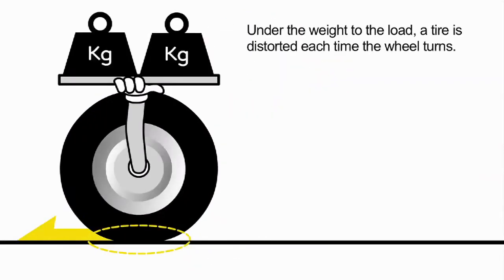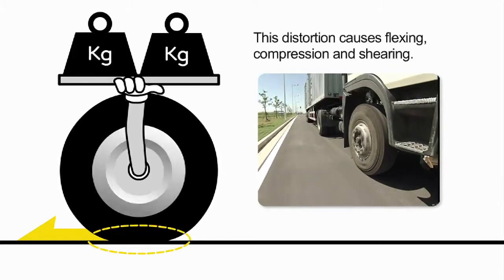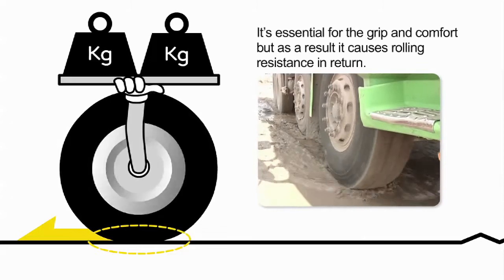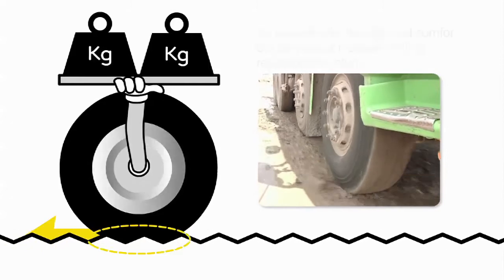Under the weight of the load, a tire is distorted each time the wheel turns. This distortion causes flexing, compression, and shearing. It's essential for the grip and comfort, but as a result, it causes rolling resistance in return.